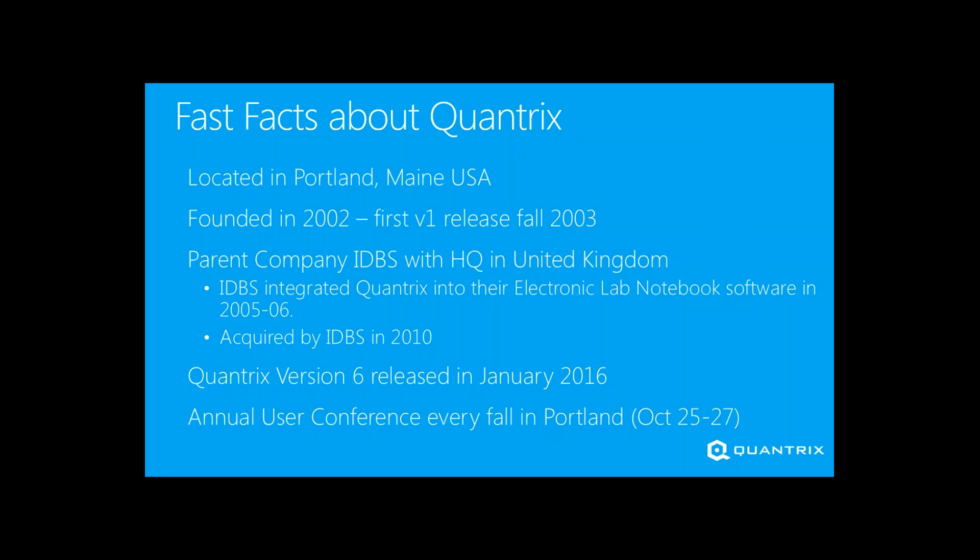IDBS tends to sell to the pharmaceutical life sciences and R&D industries, whereas Quantrix sells to more of a financial budgeting, planning, and forecasting use case. They handle all our back-office accounting, human resources, and backbone work needed to stand up a business, while in Portland, Maine, we concentrate on the product and deliver it to customers doing budgeting, planning, forecasting, and forward-looking analysis.